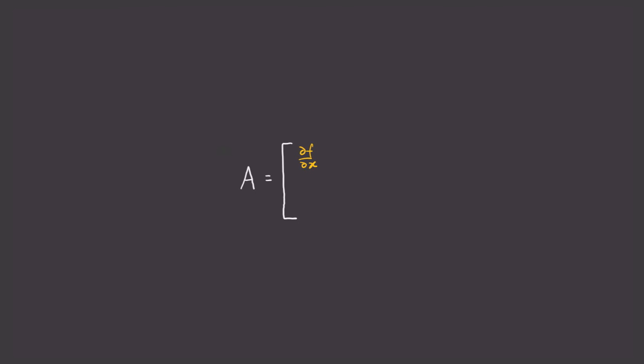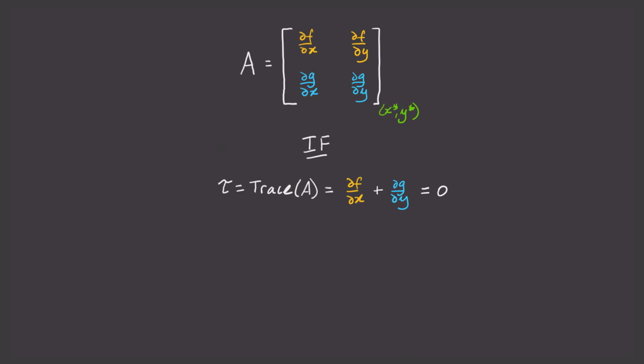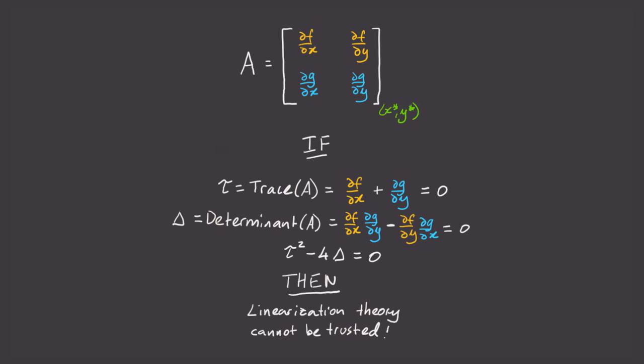Secondly, there are very special edge cases, depending on the matrix A, where the linearization theory breaks down. It turns out that if the trace of the matrix A is equal to zero, or if the determinant of the matrix A is zero, or if the trace squared minus four times the determinant is equal to zero, then our linearization theory can't be trusted. It turns out that in these cases, the nonlinear terms that were truncated earlier are enough to nudge the system into a different region of dynamical behavior.